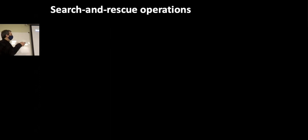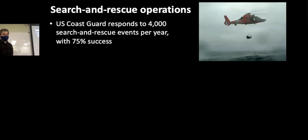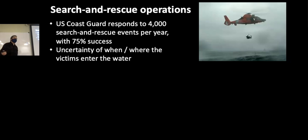The Coast Guard responds to 4,000 search and rescue events per year. It's just the U.S. Coast Guard with a 75% success rate. Success means you're found alive. So we'd like this number to be higher. I mean, 4,000 events per year, that's 10 per day. I was actually shocked when I heard that. The things that affect search and rescue operations is there's uncertainty about when and where victims enter the water. We've lost contact. We haven't heard from this ship in four hours. So you have the last known location. And the response time needs to be quick if you want to save lives. So we're thinking of just a few hours here, not days, but hours.